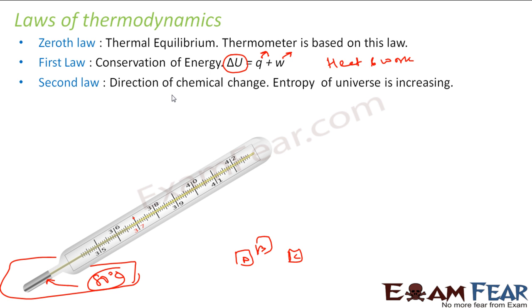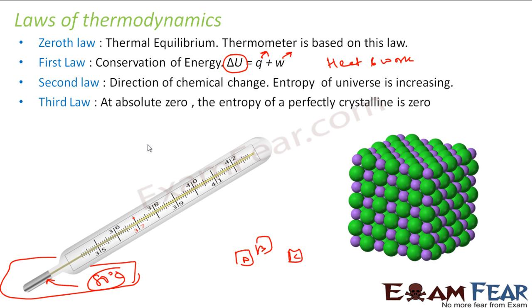Then there is the second law of thermodynamics, which talks about the direction of chemical change, and it says that the entropy of the universe is increasing. There is also a third law of thermodynamics, which states that at absolute zero Kelvin, the entropy of a perfect crystalline substance is zero. We will discuss all these laws in detail.